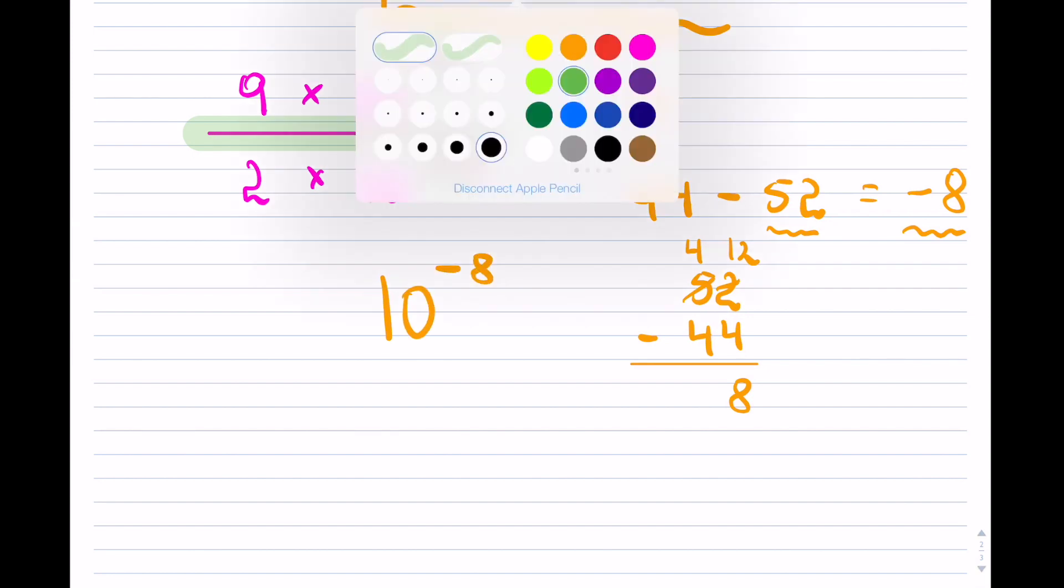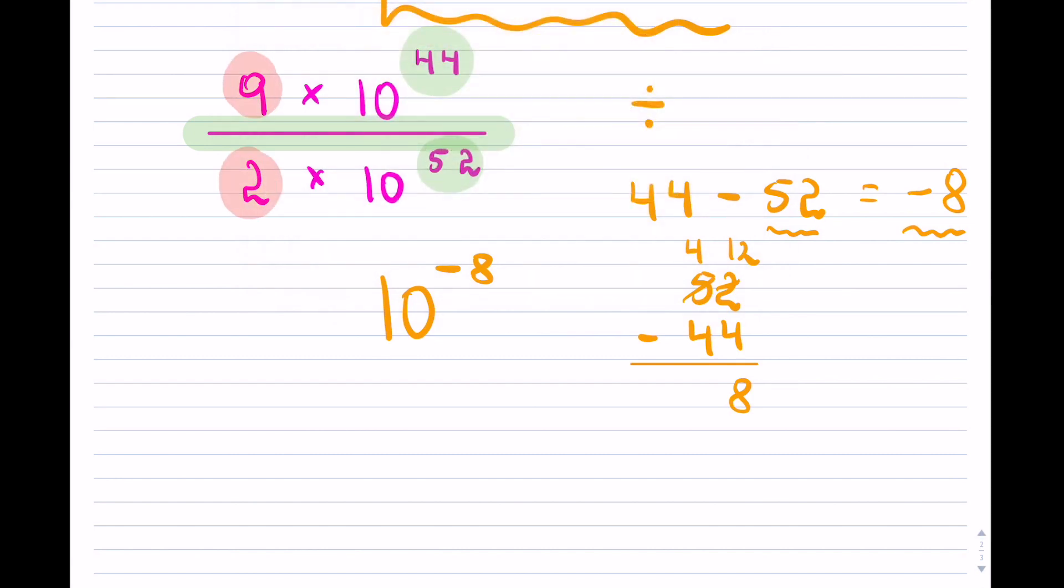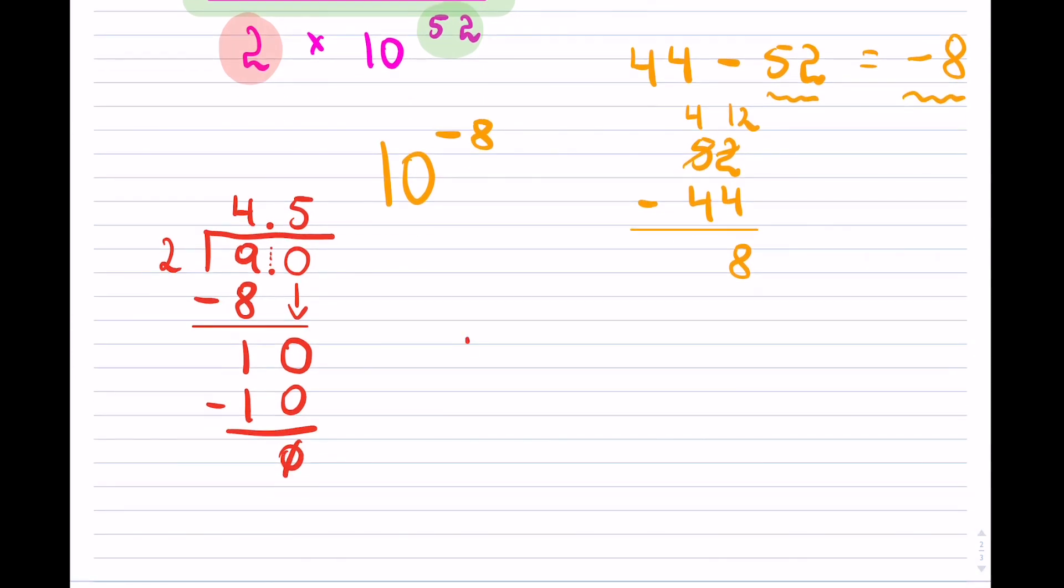Now, like before, the leading numbers we simply will divide. So 2 goes into 9, I can do that on the side if you like. So 2 goes into 9 actually 4 times, 4 times 2 is 8. So subtract gives me 1, so I have a remainder, so I have to carry this forward. So I have to add a 0. Notice the decimal, okay, we'll stick there. 2 into 10 goes 5 times, it goes evenly.